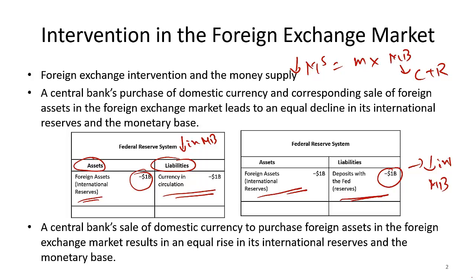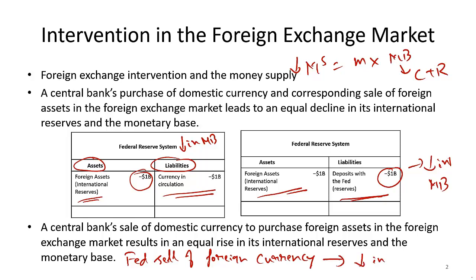A Fed sale of domestic currency to purchase foreign assets in the foreign exchange market results in an equal rise in international reserves and monetary base, and vice versa. So if the Fed decides to buy foreign exchange, they will be releasing more dollars, so monetary base will increase. On the other hand, if the Fed decides to sell foreign exchange, monetary base will decrease because currency in circulation or reserves are going to decrease. Bottom line: Fed sale of foreign currency leads to a decrease in monetary base, and vice versa.